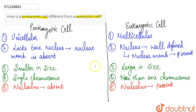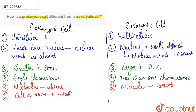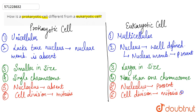Cell division in prokaryotic cells occurs only by mitosis, whereas in eukaryotic cells, cell division can occur by two ways — either by mitosis or by meiosis.